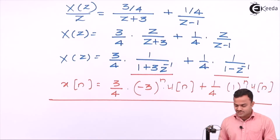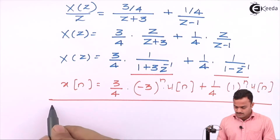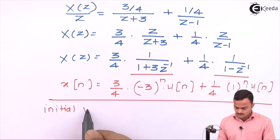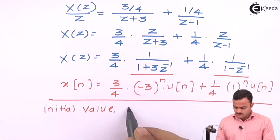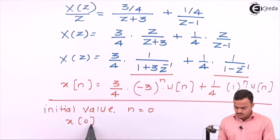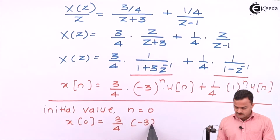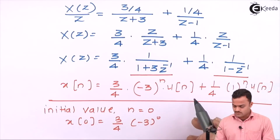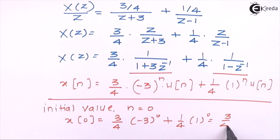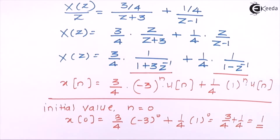We have this as x(n). Let's check the initial value: putting n equal to 0, we get x(0) as (3/4)(−3)⁰ u(0) plus (1/4)(1)⁰ u(0). Since u(0) is 1 and (−3)⁰ is 1, this gives 3/4 plus 1/4, which equals 1. This matches the value we obtained using the initial value theorem.